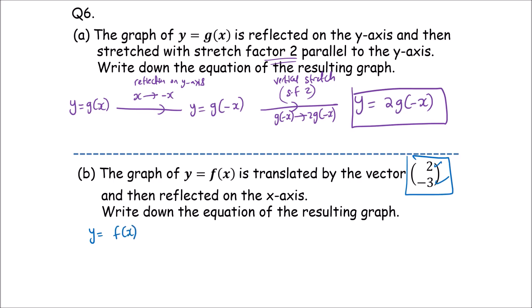Y equals f of x. If you want to do a translation of (2, -3), it means a horizontal translation of 2 units to the right — you replace x with x-2. Next, if you want to do a vertical translation of 3 units down, you subtract 3 from the function. So we get y equals f(x-2) minus 3.